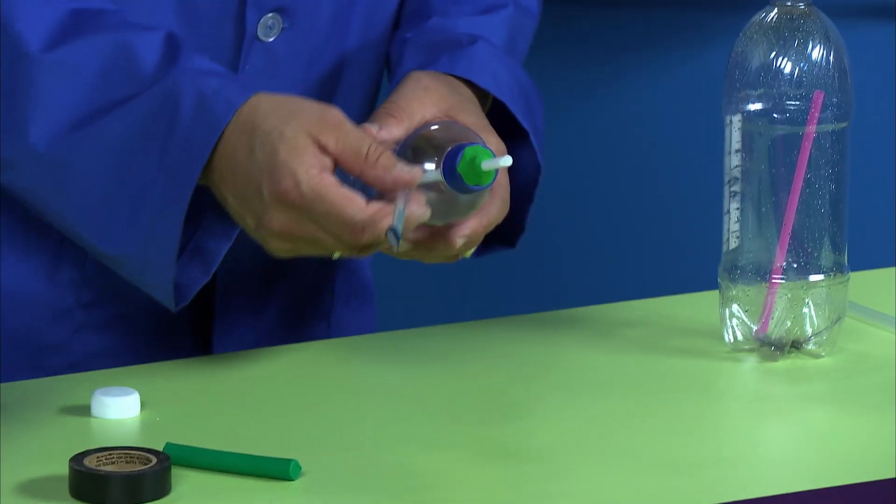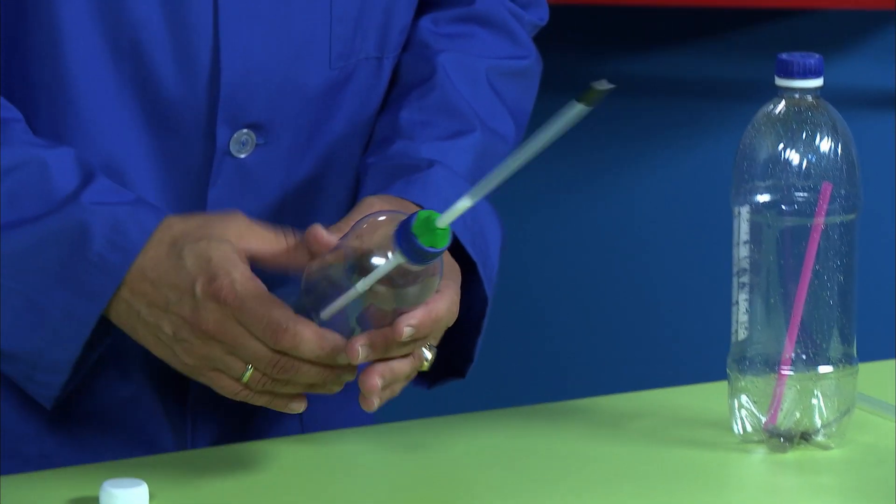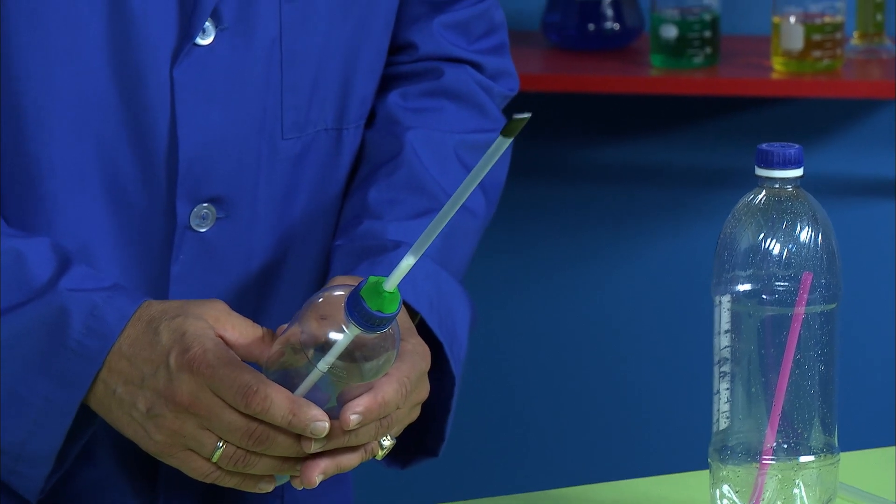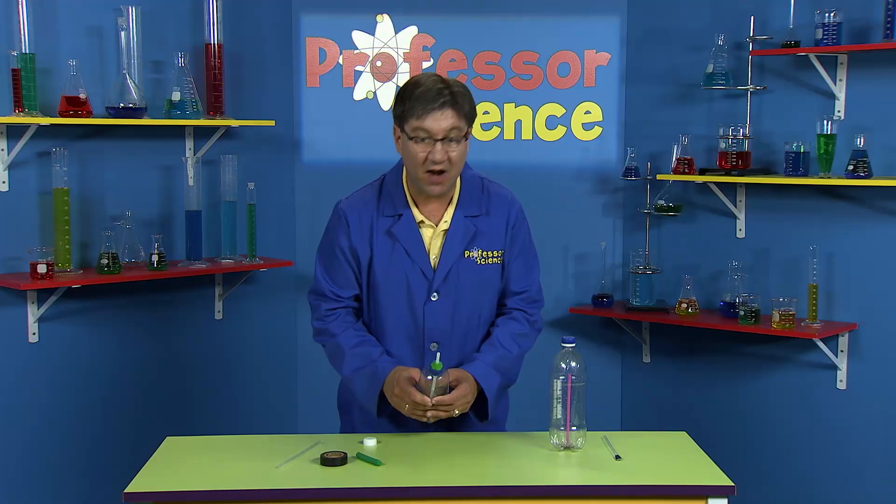So then to load your rocket you put the rocket on top of the smaller straw like that and then to launch it you just squeeze the bottle like this. And there goes your rocket.